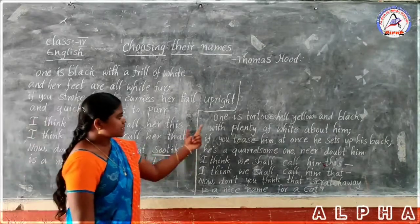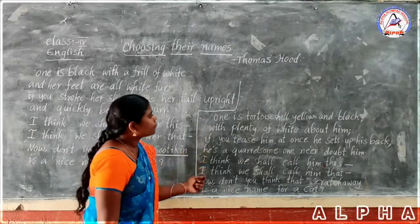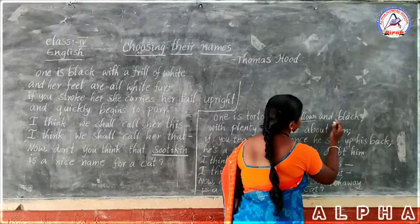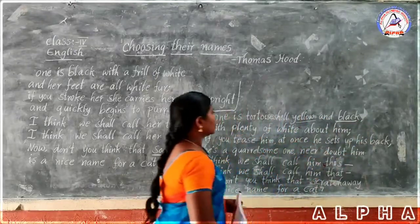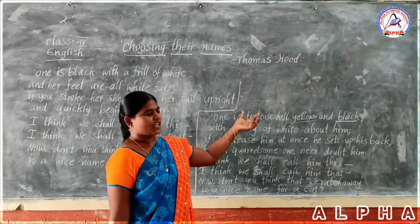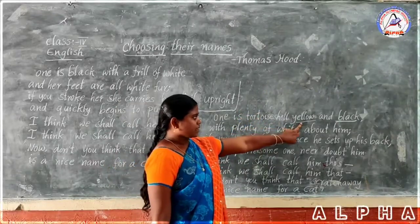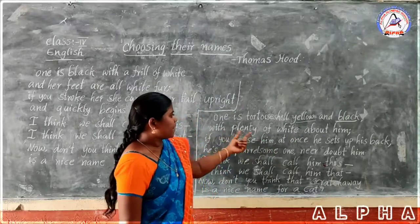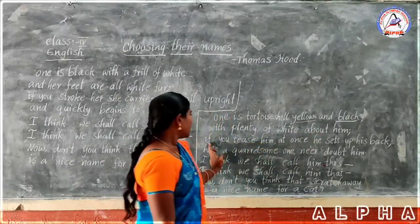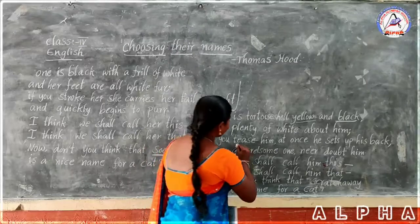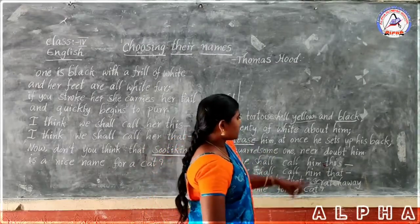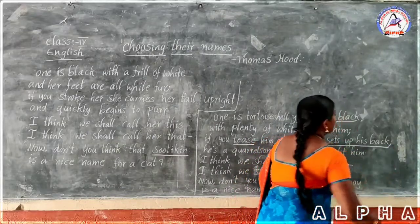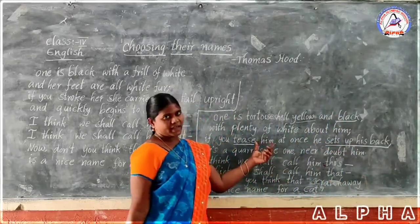Next, this is the third stanza. 'One is a tortoiseshell, yellow and black.' Do you know tortoiseshell? It has two colors — yellow and black. If you tease him, he sets up his back at once. Sets up his back means he gets angry quickly.